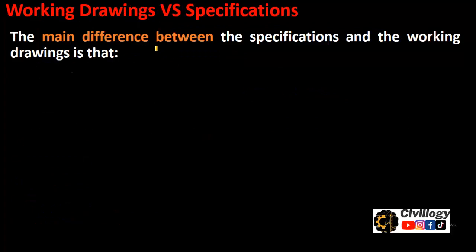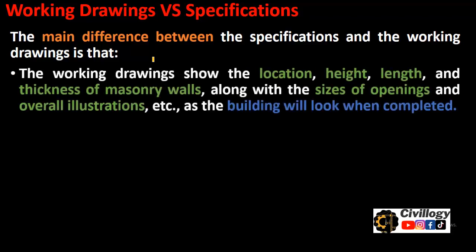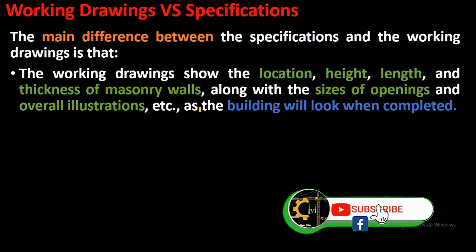Now if we compare drawings and specifications, the main difference between specifications and working drawings is that working drawings show the location, height, length, and thickness of masonry walls, along with the sizes of openings and overall illustrations — how the building will look like when completed.